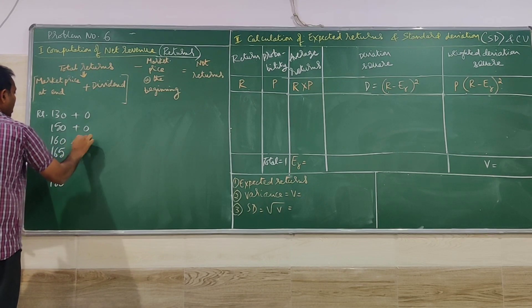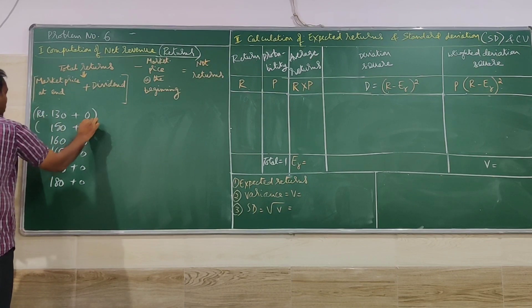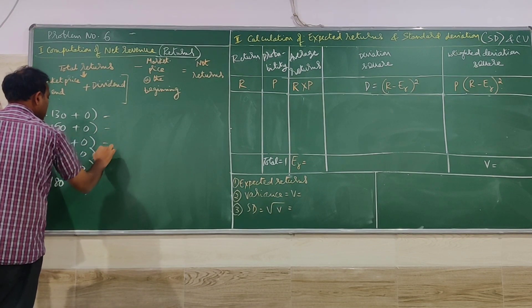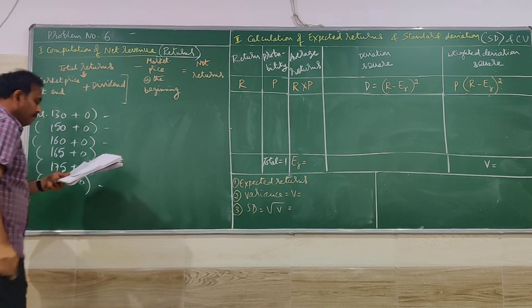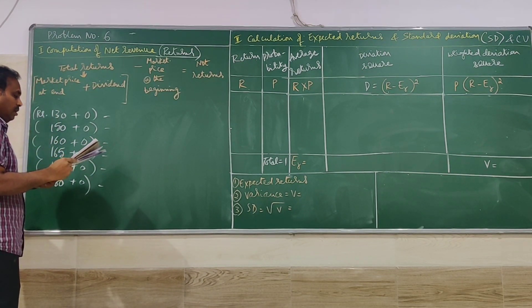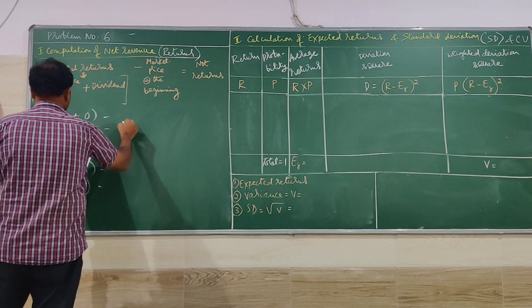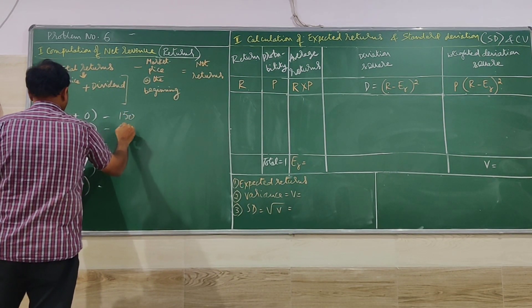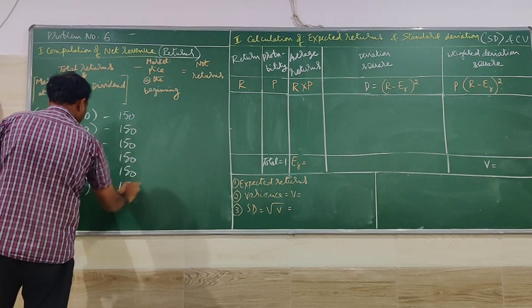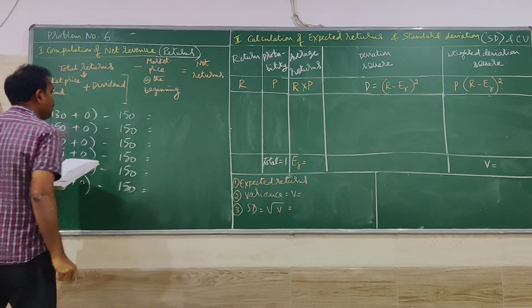Pays no dividend, so dividend is 0. Then minus market price at the beginning, that is given in the problem. In the beginning it is given costing Rs. 150. At the beginning 150.